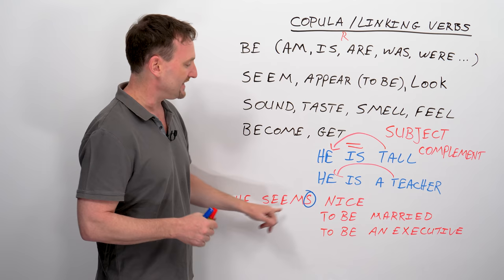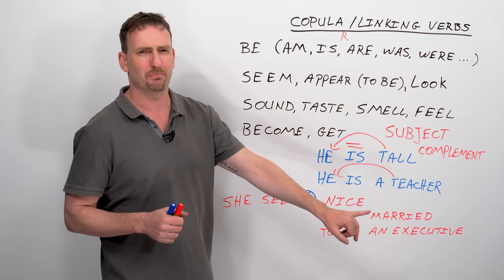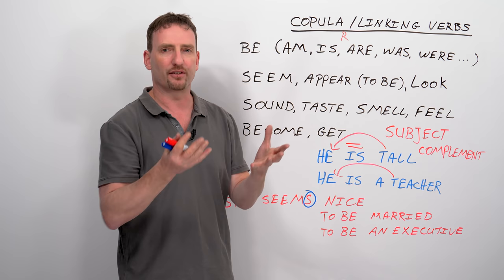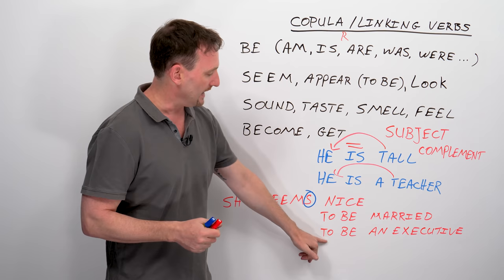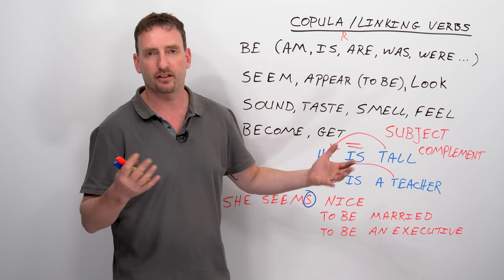She seems nice means that it's a possibility that she's nice. She looks nice, she appears to be nice, she seems nice. All of these mean the same thing, that I think she's nice but I might be wrong. She is nice, it's a fact. I'm not wrong, it's a fact. There's not wrong or right, there's is or isn't. So she seems nice, adjective describing she. She seems to be married. So I'm still using an adjective, but now I'm using to be because she seems married doesn't make much sense. I'm describing her situation.